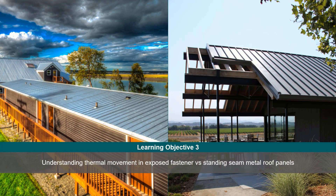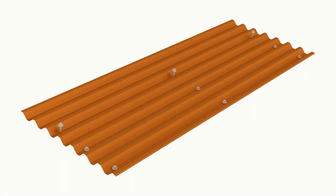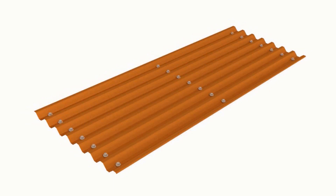Now for the third and final learning objective: understanding thermal movement and exposed fastener versus standing seam metal roof panels. Metal roofing expands when heated and contracts when cooled. By attaching a panel with exposed fasteners, you are creating a fixed point at every fastener location. Exposed fastener panels were not designed to accommodate for thermal movement, and over time, panels will continually push and pull at the fastener locations until one gives — typically the panel, as its tensile strength is less than that of the fastener.